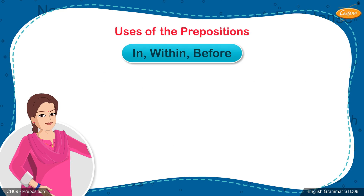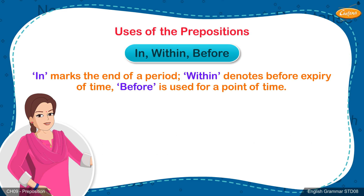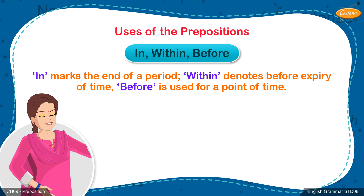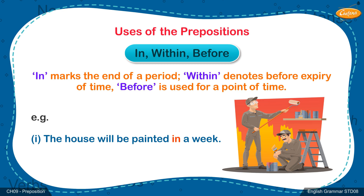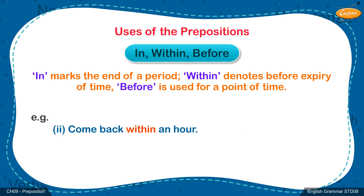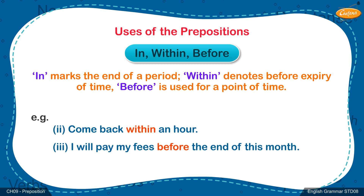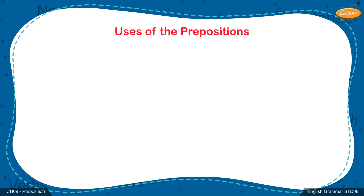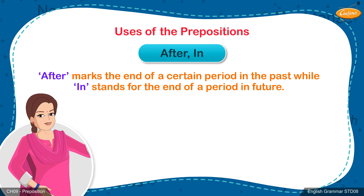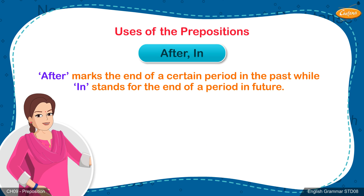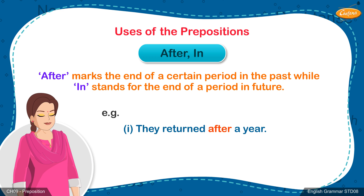In vs Within vs Before: 'In' marks the end of a period. 'Within' denotes before expiry of time. 'Before' is used for a point of time. Examples: 1. The house will be painted in a week. 2. Come back within an hour. 3. I will pay my fees before the end of this month. After vs In: 'After' marks the end of a certain period in the past, while 'in' stands for the end of a period in future. Examples: 1. They returned after a year. 2. He will finish the course in a year.